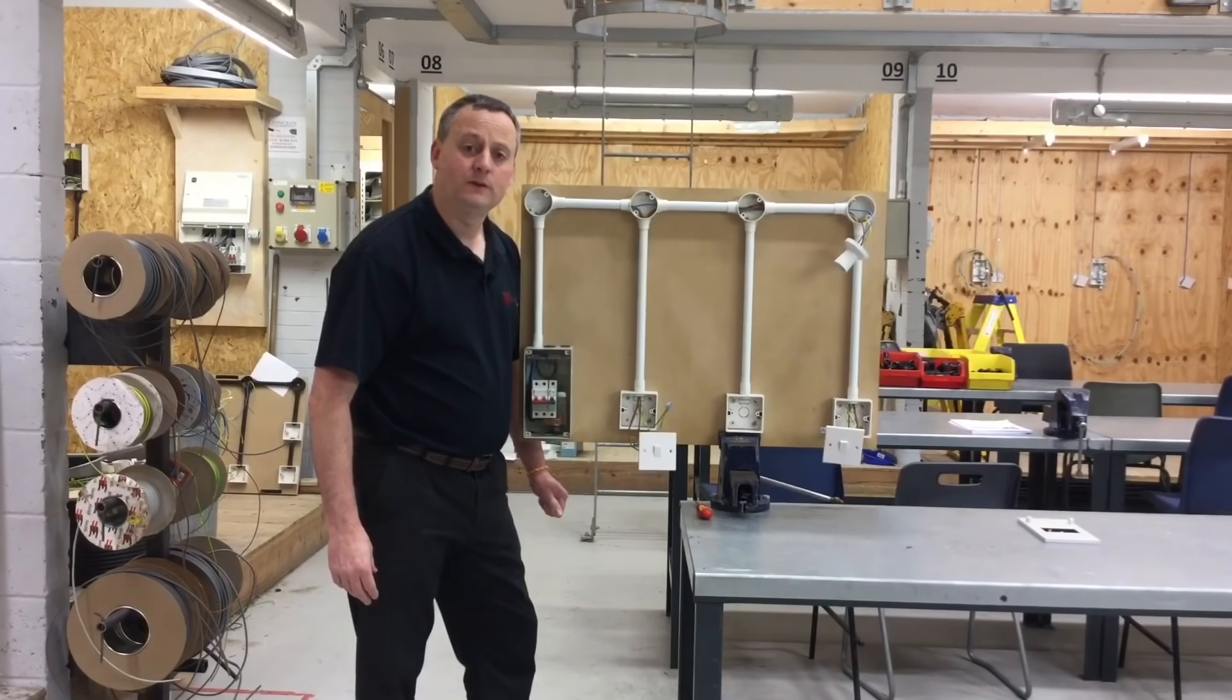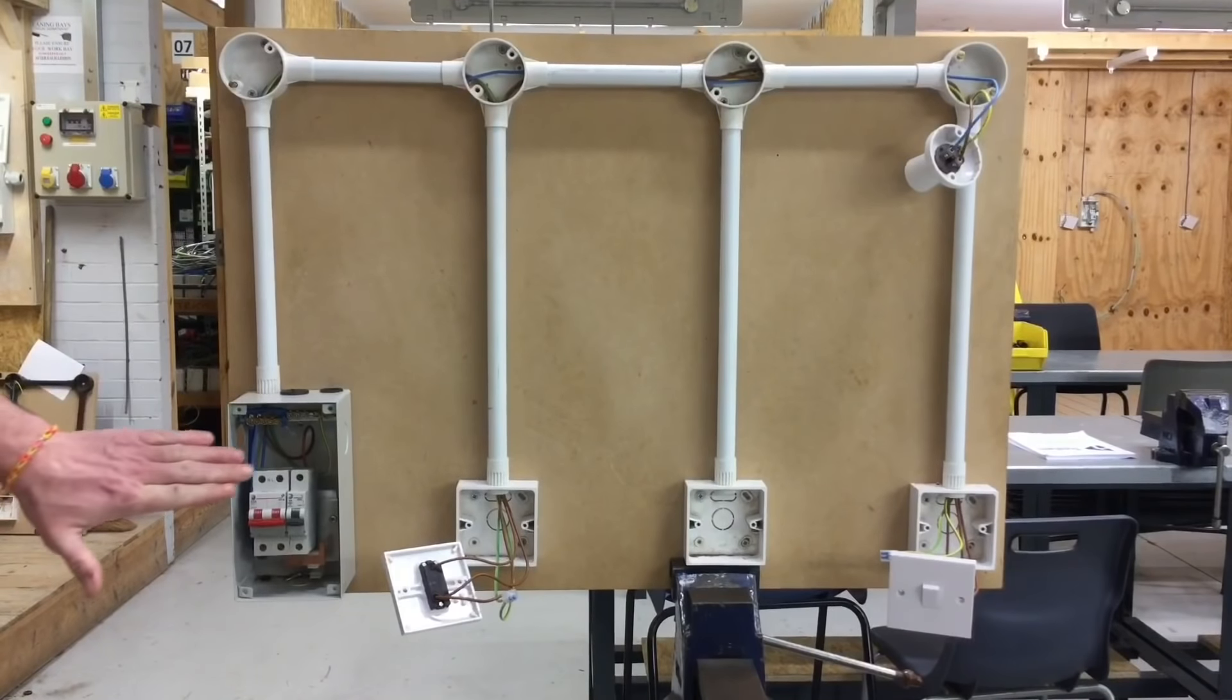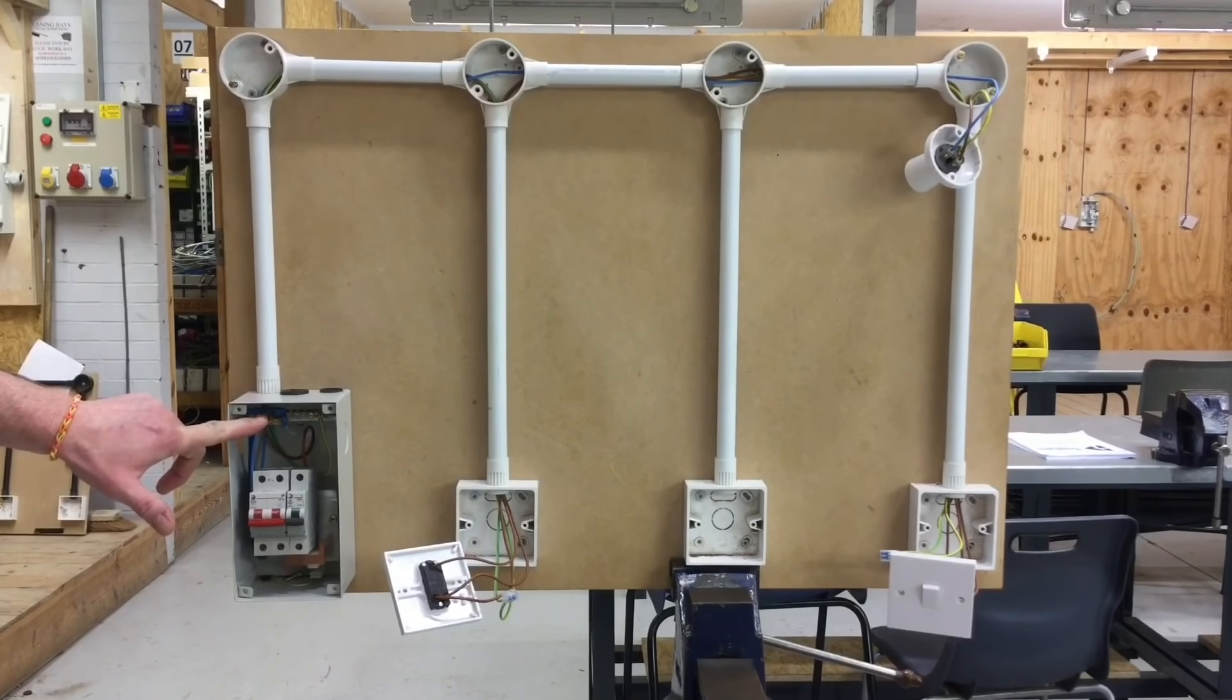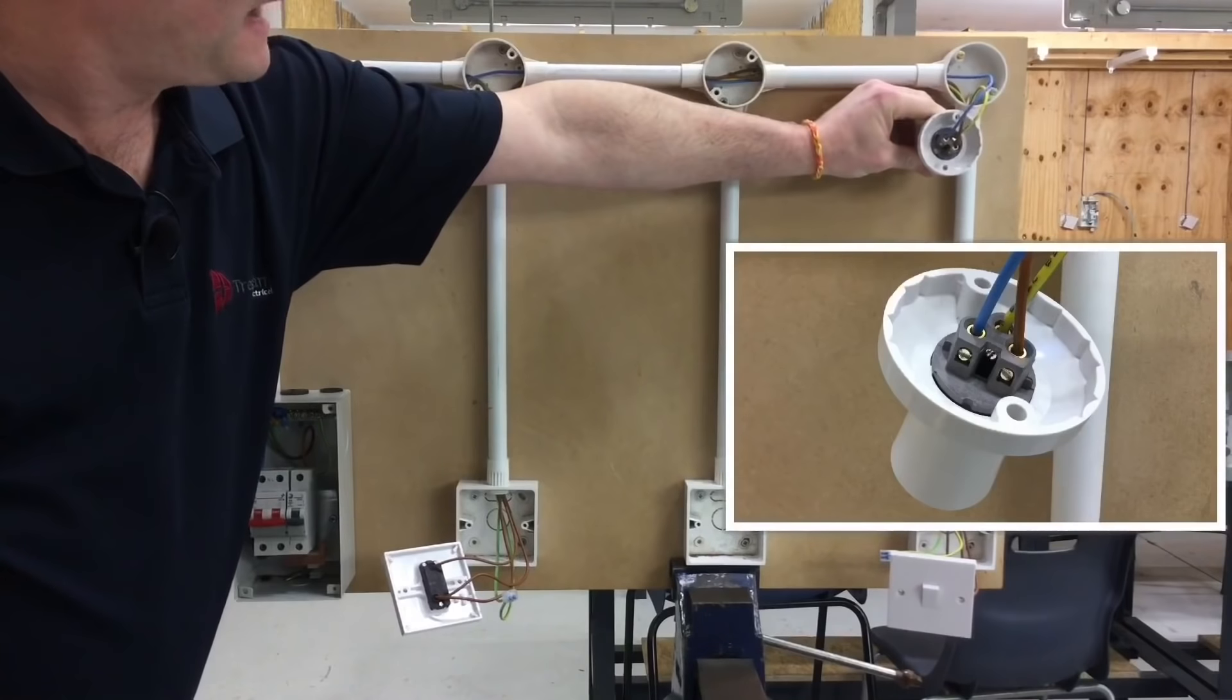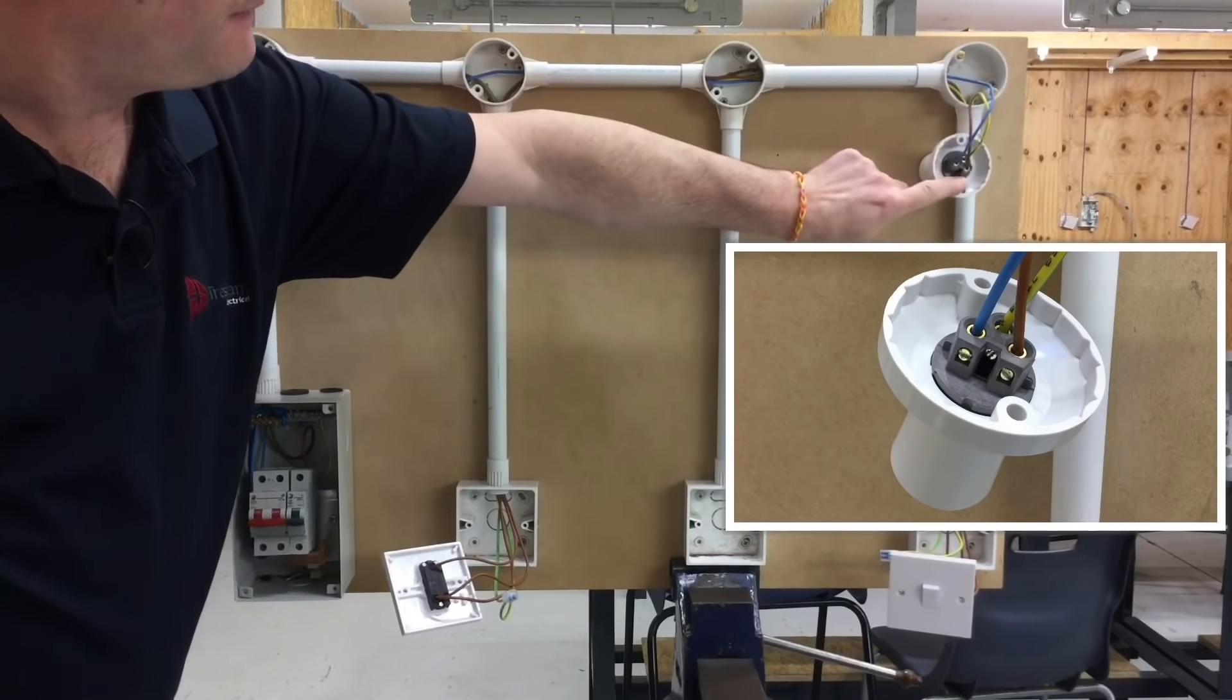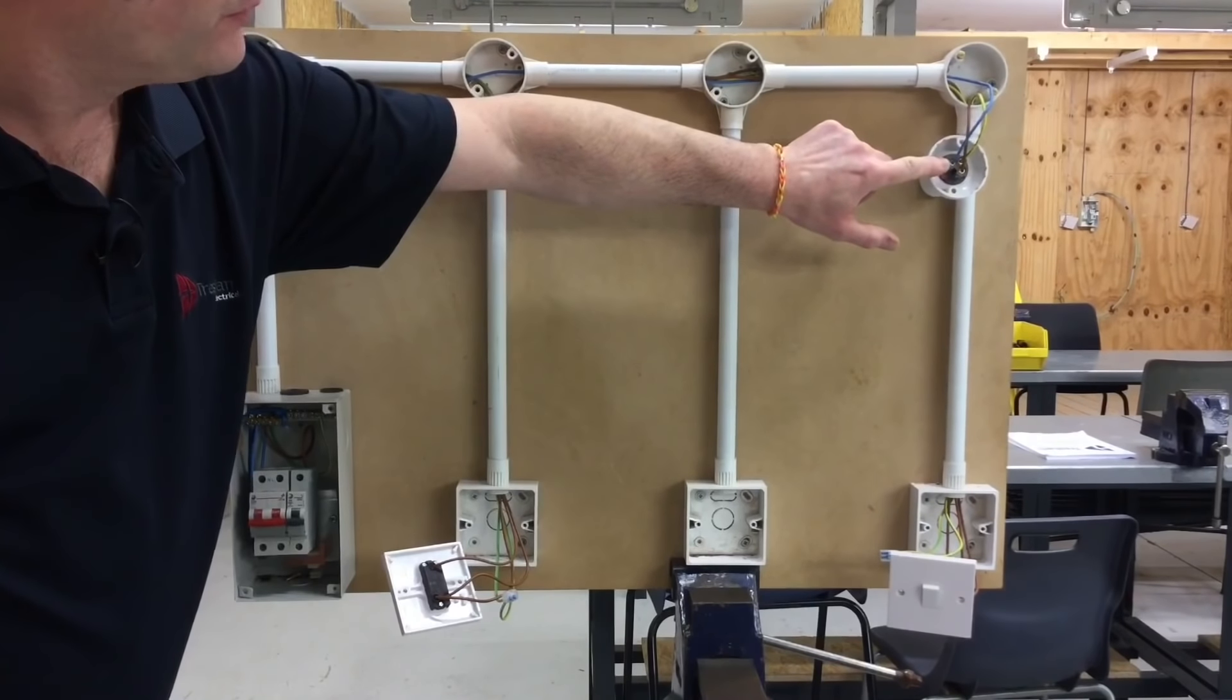Starting with the neutral, the blue neutral is connected within the neutral termination within the consumer unit. We come out from the consumer unit and it's going to go directly to the bayonet cap lamp holder. As always, it doesn't matter if it goes on the left or right hand side, but we've connected our neutral into the lamp holder itself. So straight from the consumer unit, the neutral goes straight to the lamp holder itself.